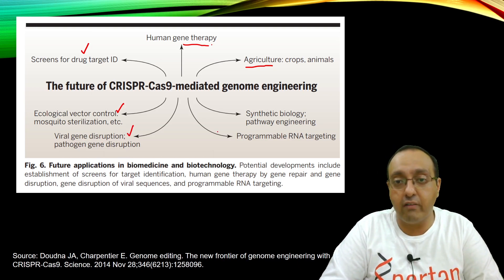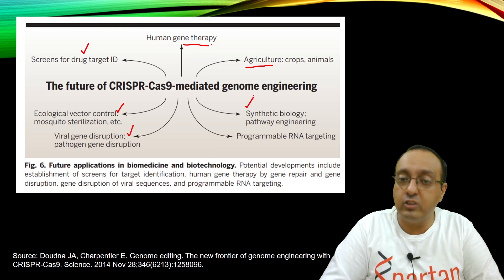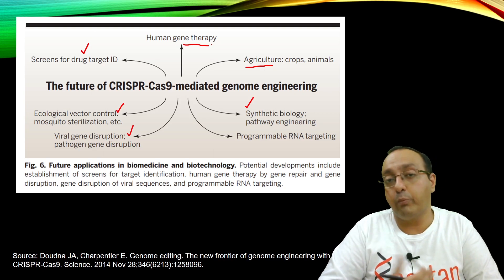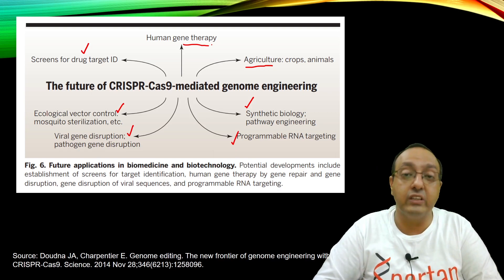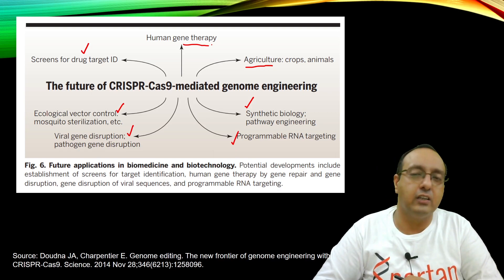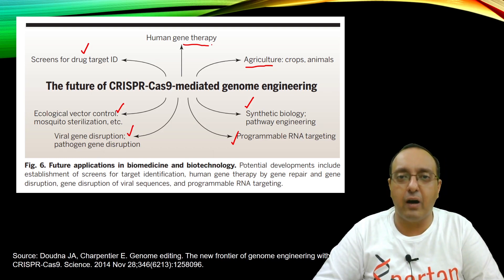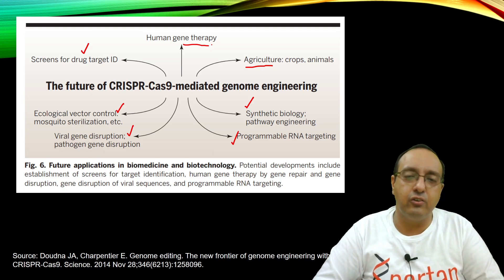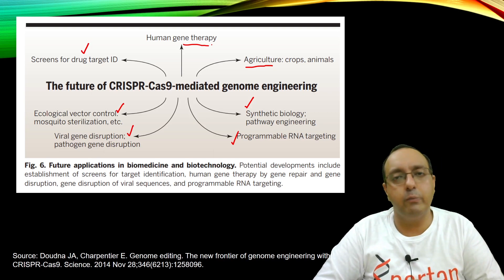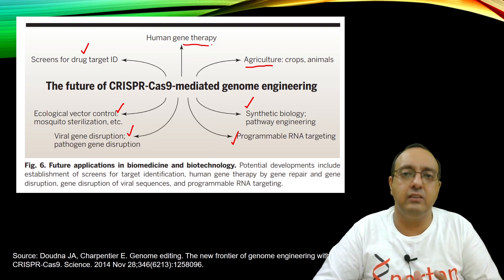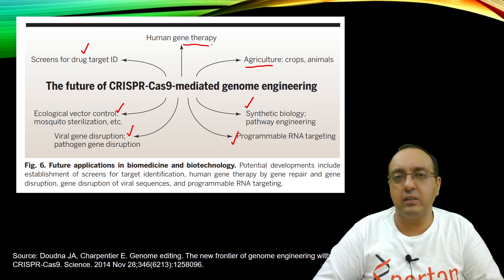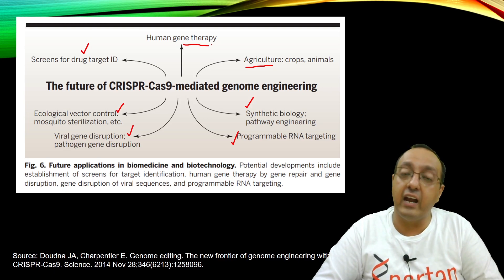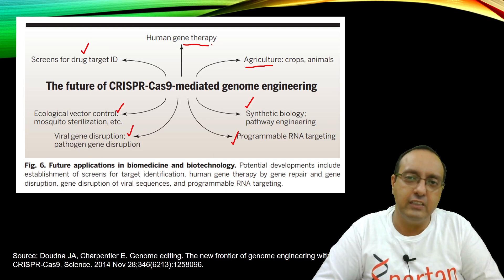Further future applications include vector control for diseases like malaria and Ebola, potential elimination of viruses such as coronavirus, synthetic biology for bioremediation or biofuel production, and RNA targeting to control gene expression. It is a very versatile and powerful tool, though with great power comes great responsibility — proper ethical considerations must be followed, and researchers have formed committees to ensure research stays within ethical boundaries. CRISPR-Cas9 has tremendous potential to reduce human suffering and improve human lives.